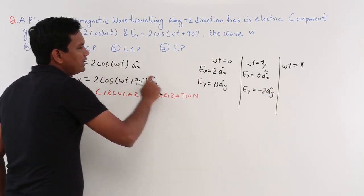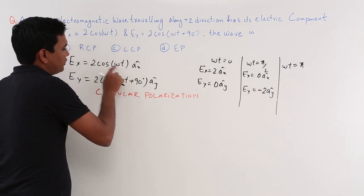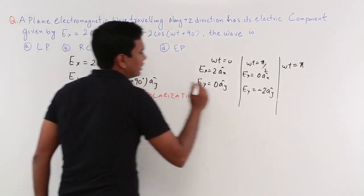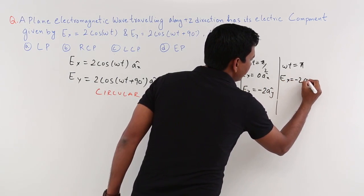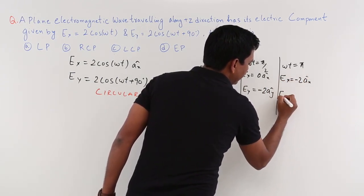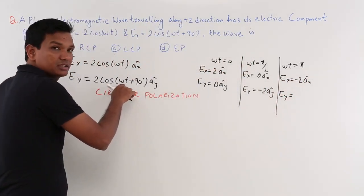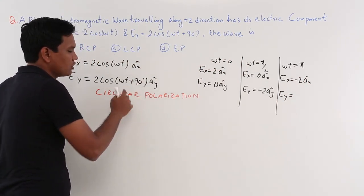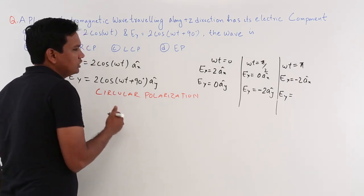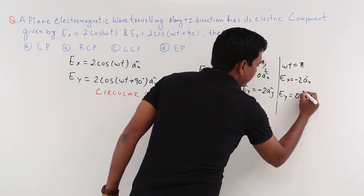At ωt = π (180°): cos(π) = -1, so Ex = -2x̂. For Ey, 180° + 90° = 270°, which is in the third quadrant, and cos(270°) = 0, so Ey = 0.